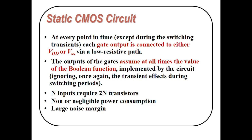In static CMOS circuits, at every point in time each gate output is connected to either VDD or VSS via a low resistive path. The gate output assumes the value of the Boolean function implemented by the circuit, ignoring transient effects during switching. There is no or negligible power consumption, and there are large noise margins. To implement N inputs in static CMOS, we need 2N transistors.